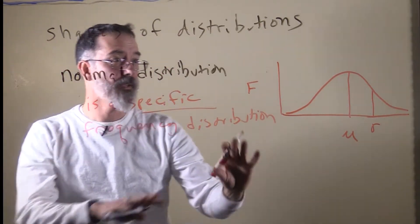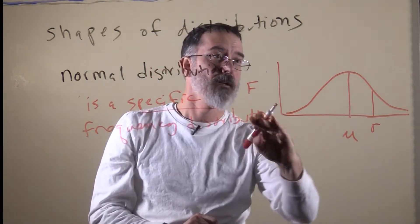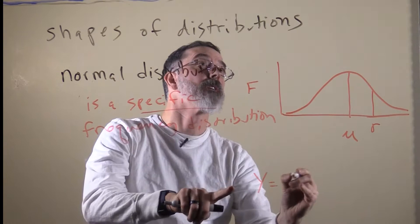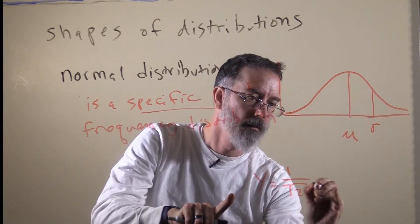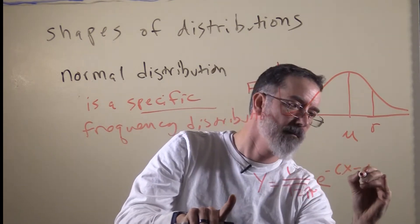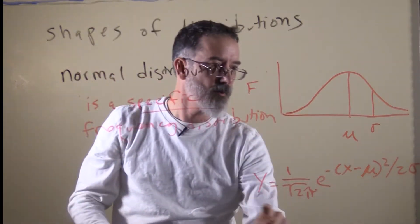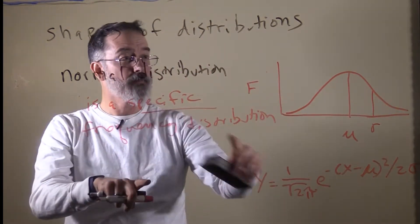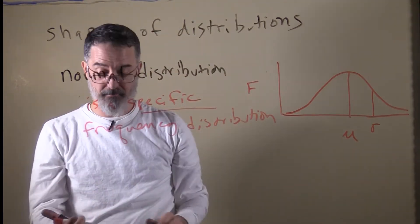The normal distribution is a specific frequency distribution. By specific, I mean every normal distribution that has ever existed has had the exact same specific shape. In fact, there is a formula that describes this shape, which is y times e to the exponent mu squared divided by 2 sigma. All normal distributions fit this formula, so that describes this shape. It is a very specific shape, and it is always the same. You do not need to know that formula or anything, I just wanted to let you know this is an exact specific shape.